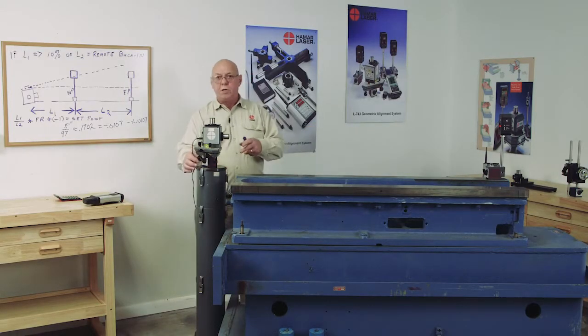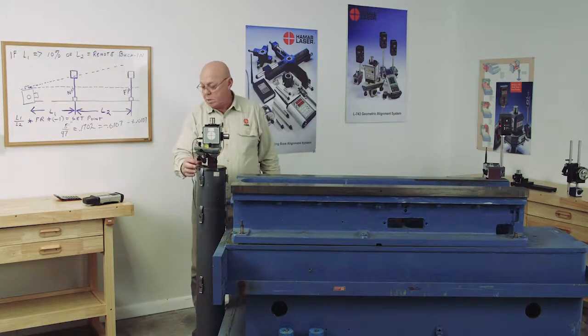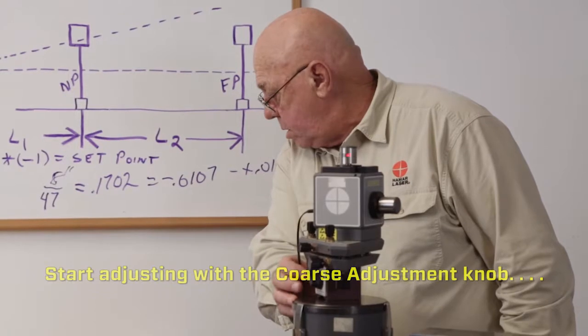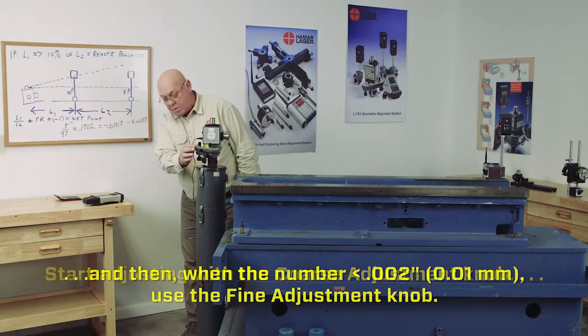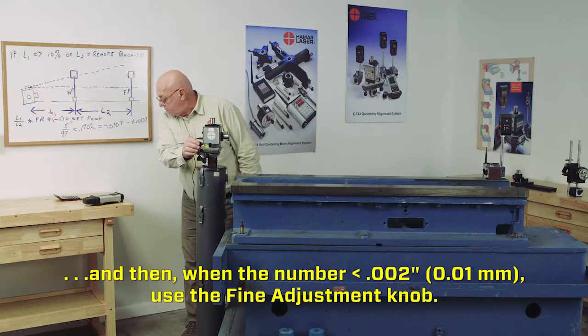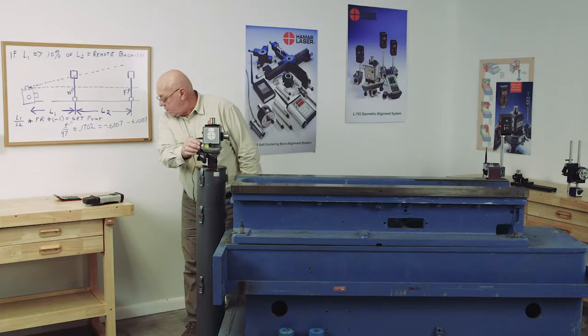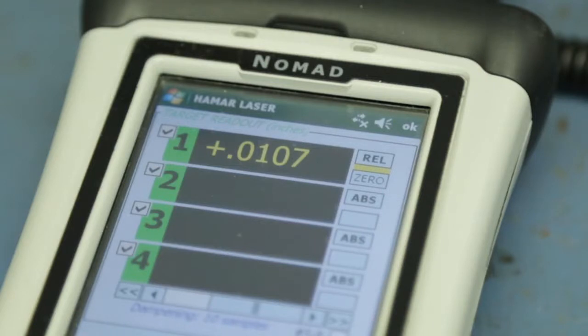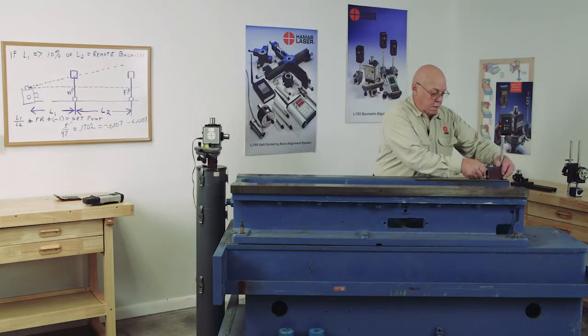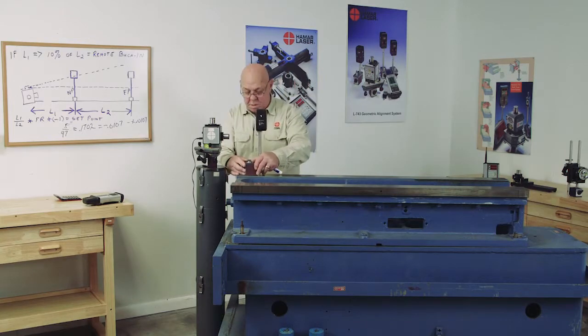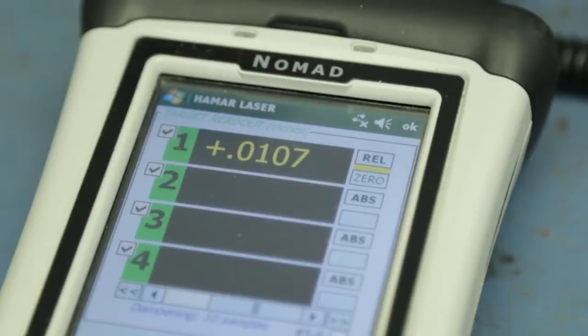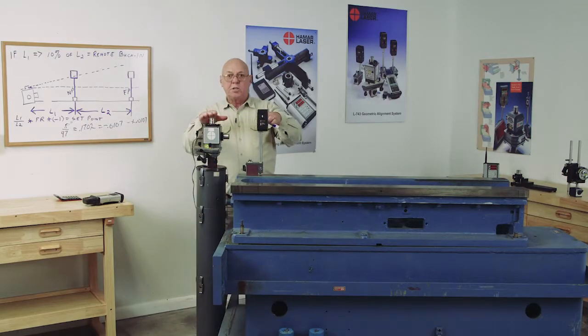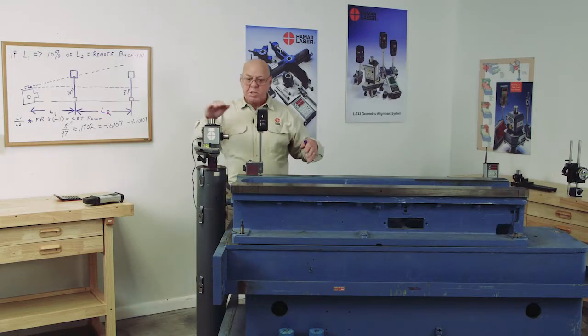So, now what I'm going to do is just tilt this until I read my set point. So, I tilt this to plus 10.7 thousandths. Bringing this back to the near point. Plus 10.7 thousandths. So, now this laser beam, because they both read the same, this is parallel.